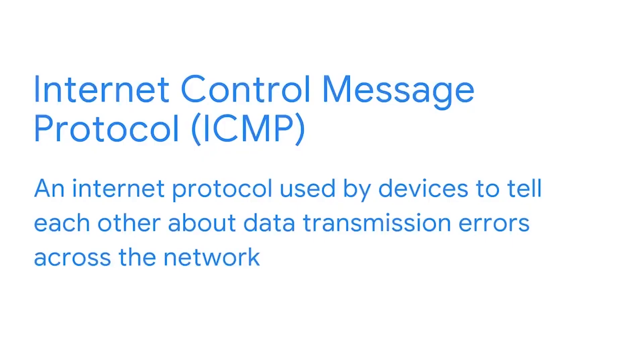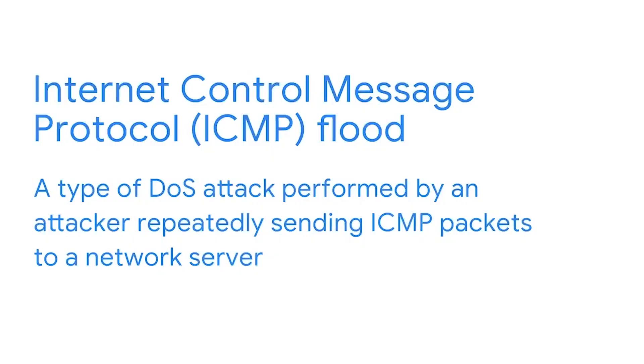Let's discuss two other common DOS attacks that use ICMP, which stands for Internet Control Message Protocol. ICMP is an internet protocol used by devices to tell each other about data transmission errors across the network. Think of ICMP like a request for a status update from a device — it will return error messages if there is a network concern. An ICMP flood attack is a type of DOS attack performed by an attacker repeatedly sending ICMP packets to a network server, forcing the server to send an ICMP packet in return, which eventually uses up all the bandwidth and causes the server to crash.